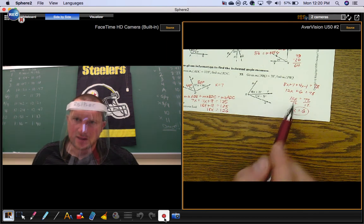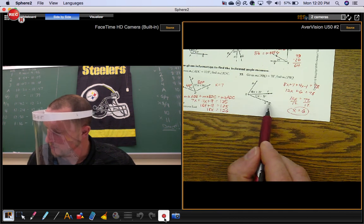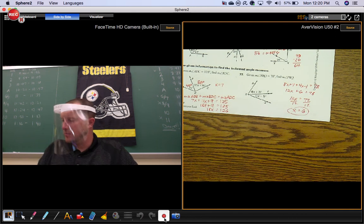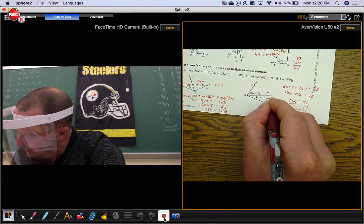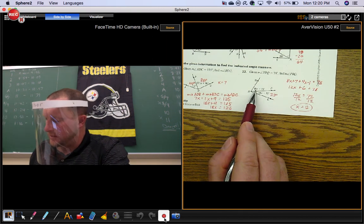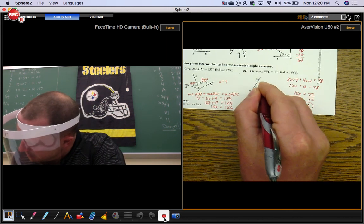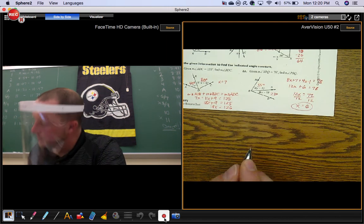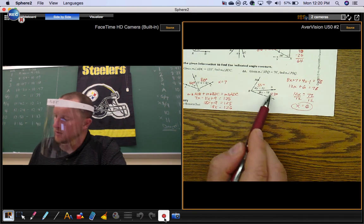x is 6, but make sure you answer the question. What's the measure of angle PRQ? That's this little one right here. 4 times 6 is 24 minus 1 is 23. 8 times 6 gives you 48 plus 7 gives you 55. How do you know?